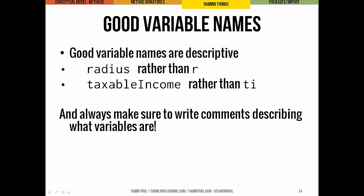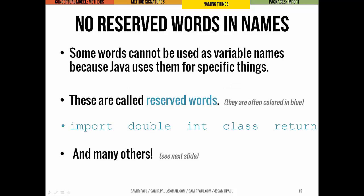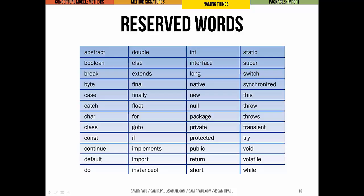As you name variables, make sure you choose names that are truly descriptive — 'radius' rather than 'r', 'taxableIncome' rather than 'TI' — so it's clear to you in a year or to someone else reading your code what a variable means. There are also some words specifically set aside in Java called reserved words that can't be used in variable names or anything else. Examples include import, double, int, class, and return. You can use int inside a variable name — like 'myInt' — but you can't name a variable just 'int' by itself. You don't need to memorize the full list; you'll pick them up as you use them.